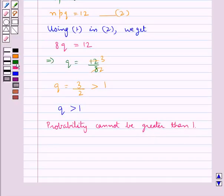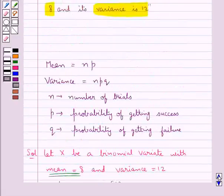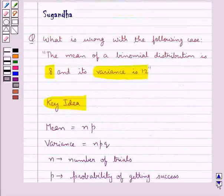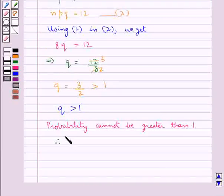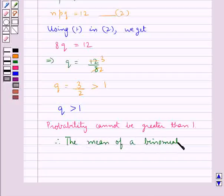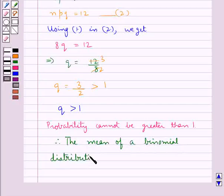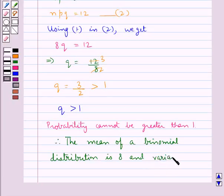Therefore, the given statement—that the mean of a binomial distribution is 8 and variance is 12—is wrong.